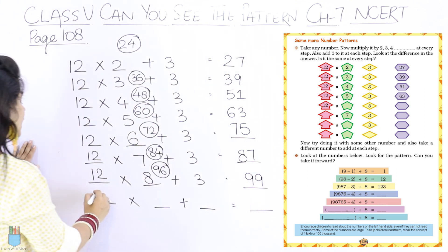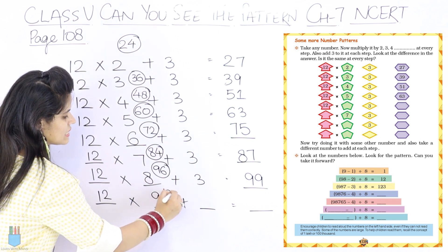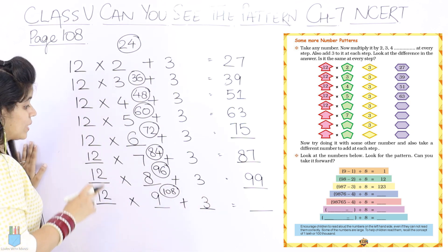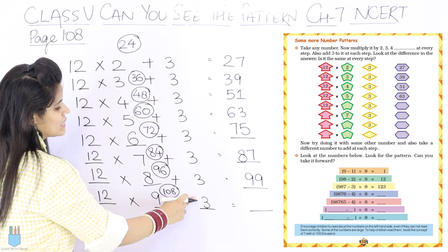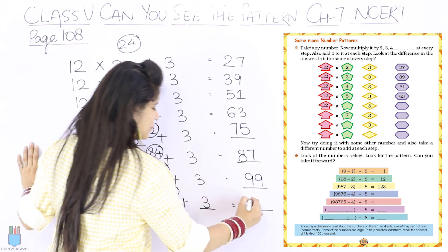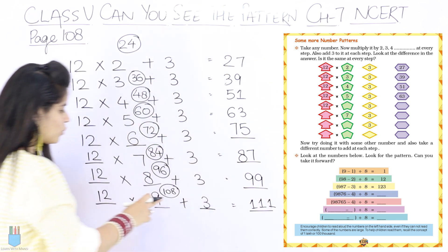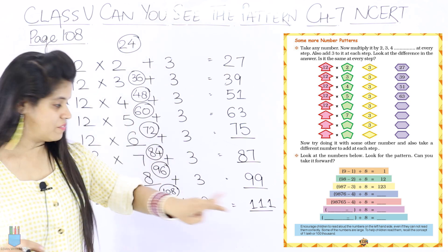So next step, what will we do? 12 into 9, which is 108. Plus 3, so 12 into 9, 108 plus 3. So 108, 109, 110, 111.